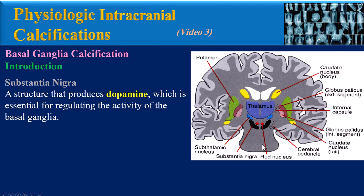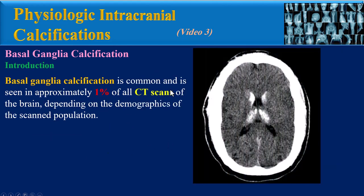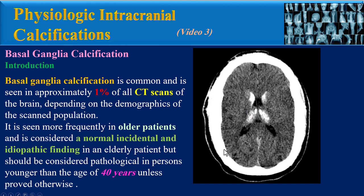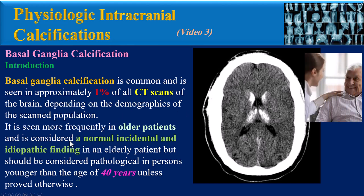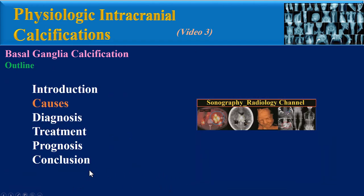The substantia nigra is a structure that produces dopamine, which is essential for regulating the activity of the basal ganglia; its degeneration is linked to Parkinson's disease. Basal ganglia calcification is common and is seen in approximately 1% of all CT scans of the brain. It is seen more frequently in older patients and is considered a normal, incidental, and idiopathic finding in elderly patients, but should be considered pathological in persons younger than 40 years unless proved otherwise.